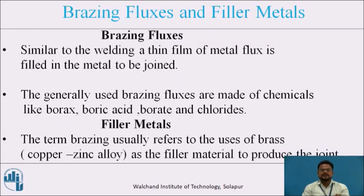Coming to brazing flux and filler metals. Similar to welding, a thin film of flux is applied to the metal surfaces to be joined. In brazing, metal oxides and surface coatings like dirt and grease affect bonding quality. Flux is used to dissolve the oxide film and react with surface coatings to form a slag and protect the surface. Generally used brazing fluxes are made of boric acid, borate, and chlorides. For brazing at lower temperatures, fluorides of alkaline metals are used. For brazing copper alloys with high phosphorus content, no flux is needed.